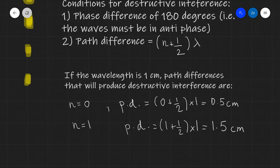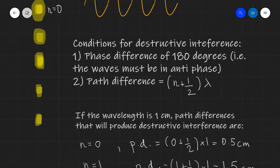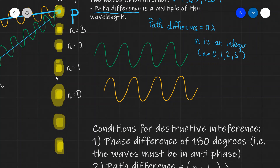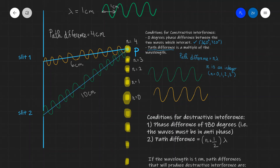Each of those integers n corresponds to the appropriate dark spot on the diagram. This was quite a long and intense lesson on path difference, superposition, and phase difference. Hopefully it all makes sense. Thank you very much for watching, and I'll see you in the next video.